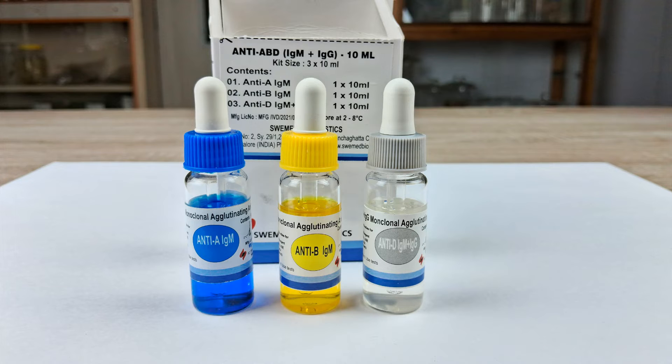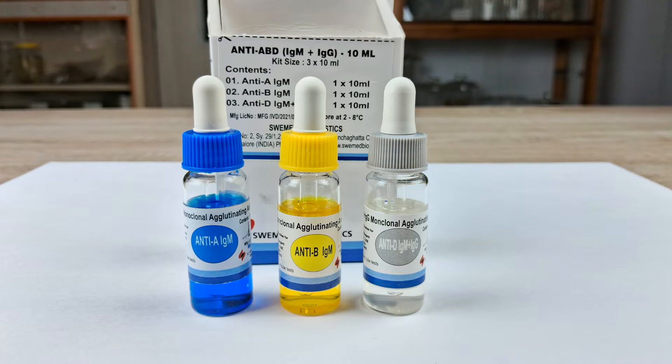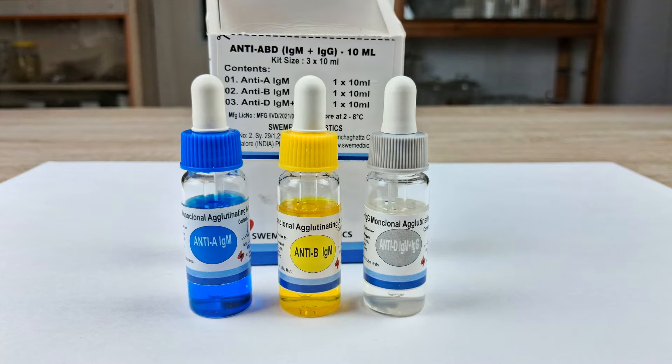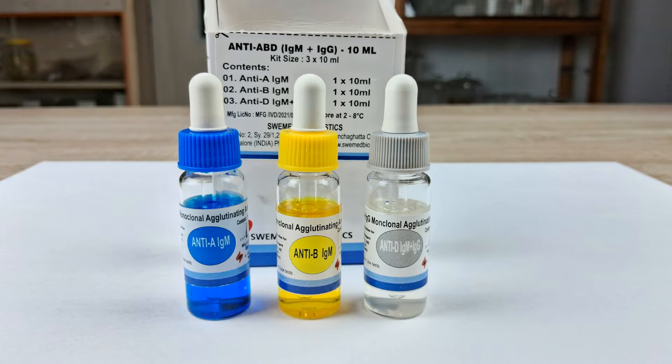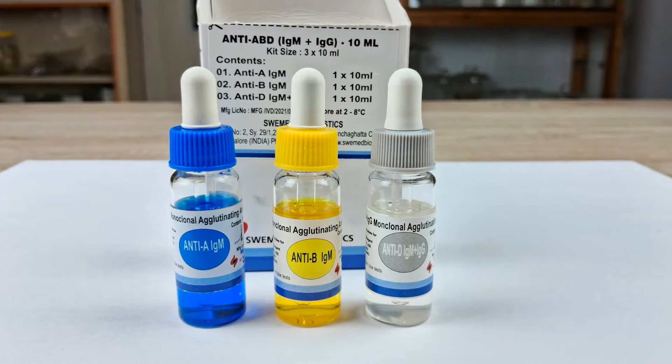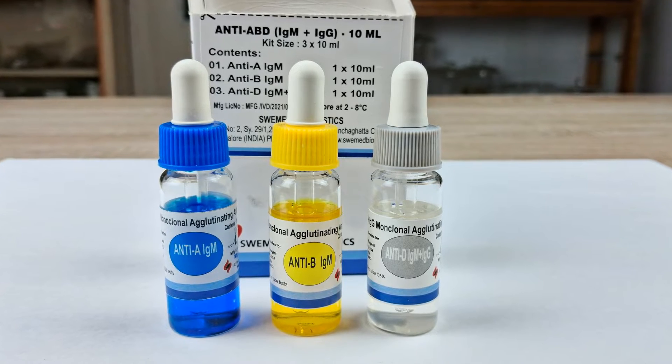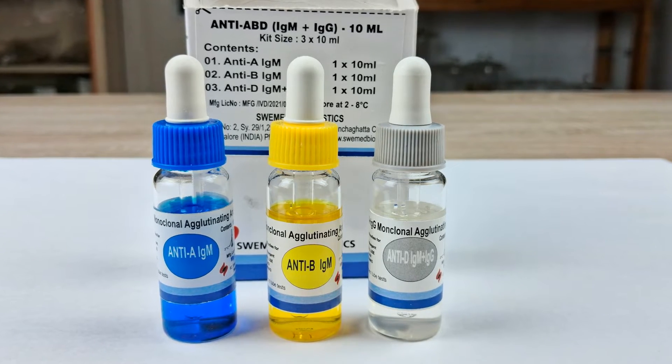In a diagnostic lab, the ABO and RH blood grouping is done using a diagnostic kit that consists of monoclonal antibodies for A, B and RH antigens. Monoclonal antibodies against antigen A, also called antisera A, comes as a blue-colored liquid reagent in a small bottle with a dropper.